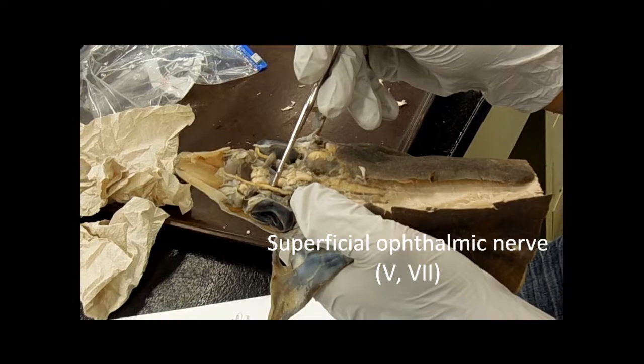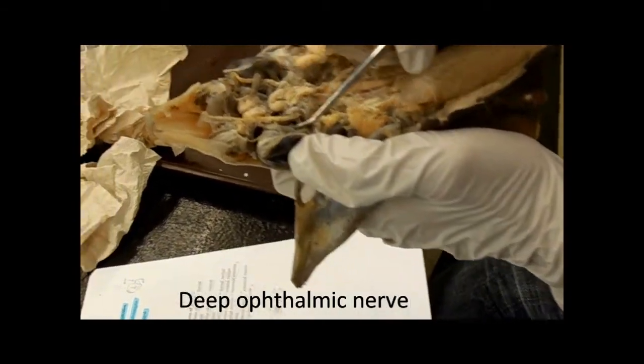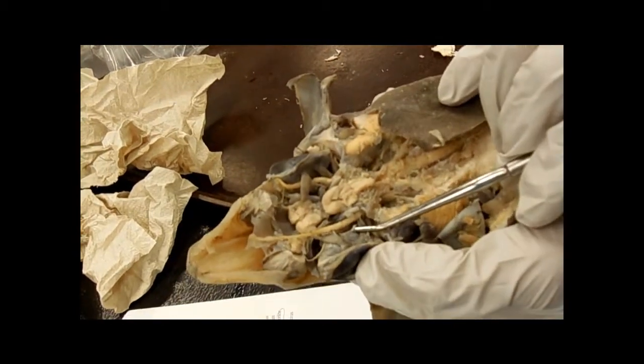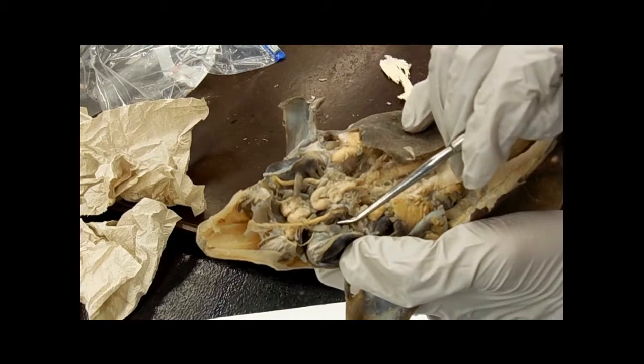You know how we had the superficial ophthalmic nerve, the deep ophthalmic nerve is the one that runs along the surface of the eye, and it's very tiny. It's that one. So, superficial, deep.